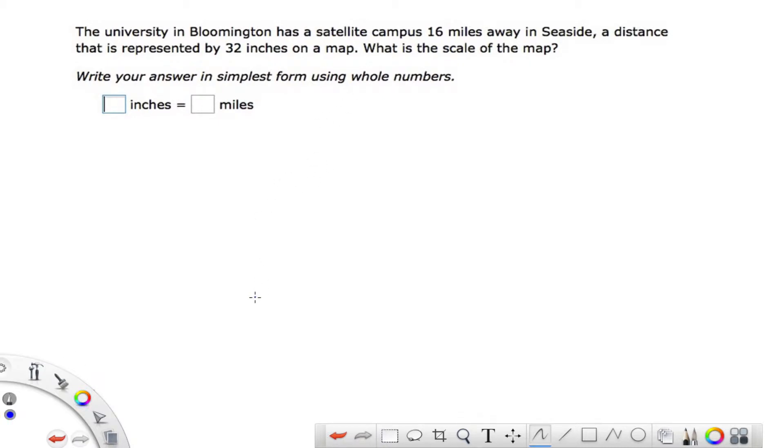This is a little bit different problem. It says the University in Bloomington has a satellite campus 16 miles away in Seaside, a distance that is represented by 32 inches on a map. What is the scale of the map? So in this case, we need to find both. We don't know one of them. We're not trying to find that distance. We just want to know what the whole map is using. So we don't even set up the proportion for this, we just have to set up the ratio. So it's inches to miles, so I'll put 32 inches to 16 miles.